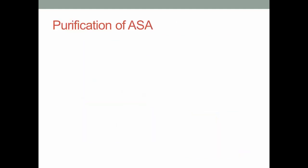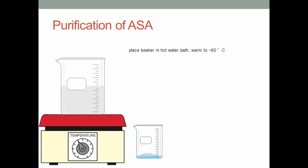Next, we will be purifying our ASA crystals. To start, add your crude crystals to 6 ml of ethanol. Then, place your beaker in a hot water bath and warm to about 60 degrees Celsius.